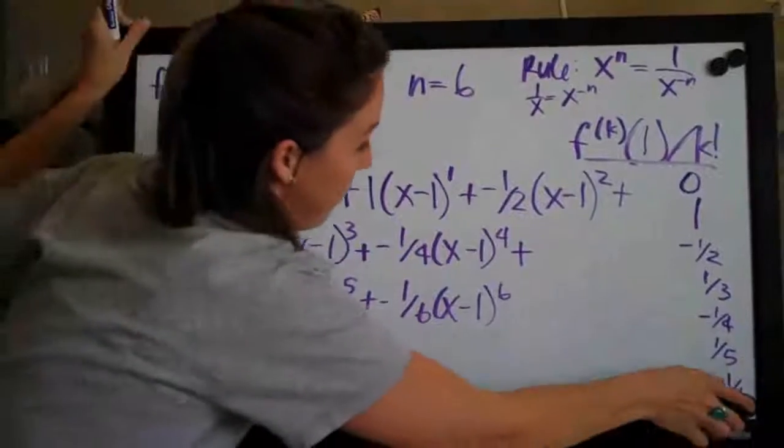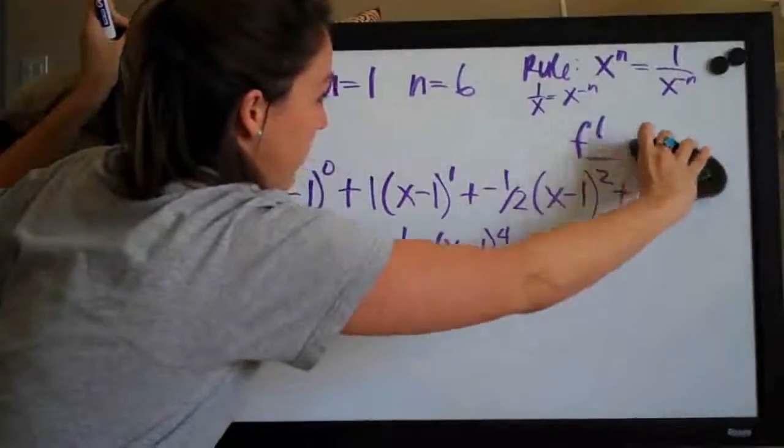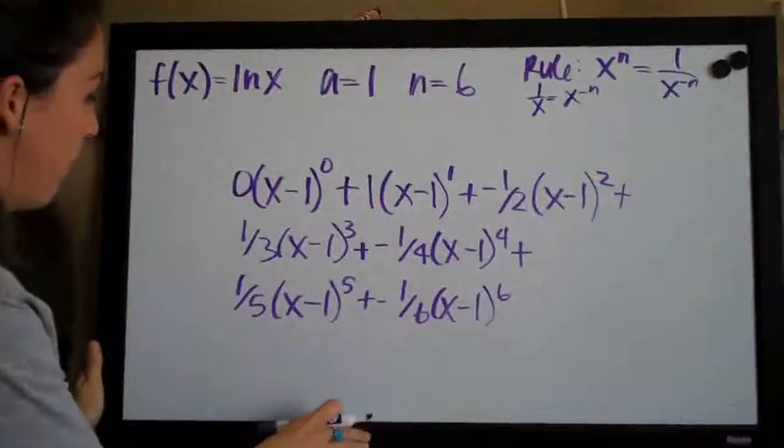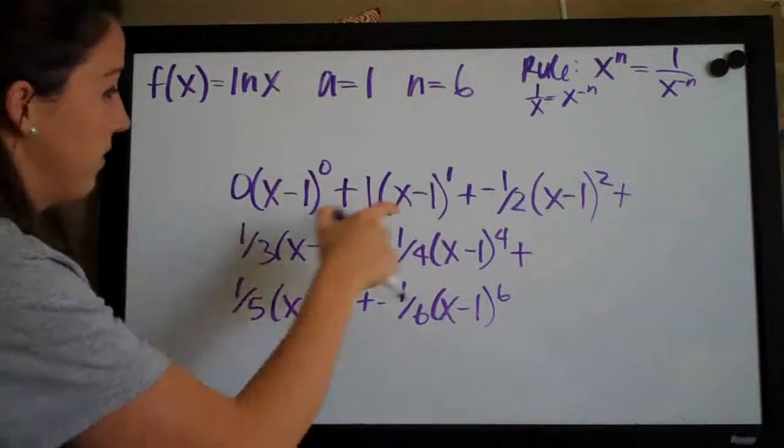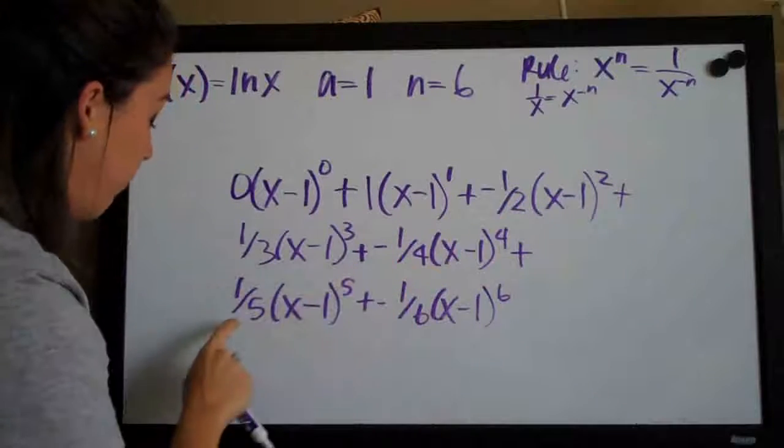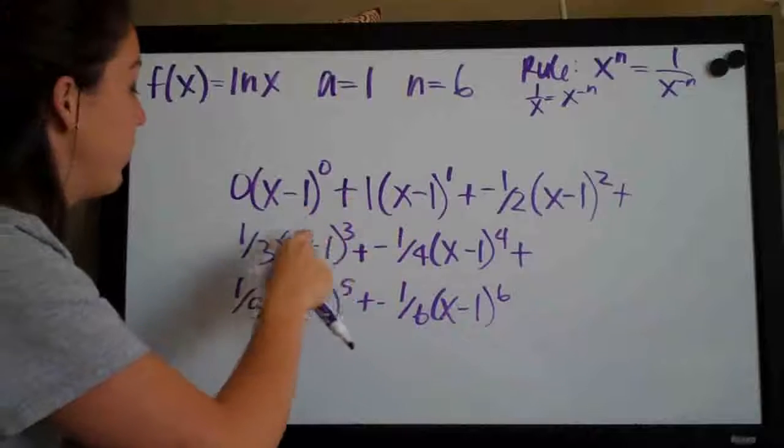So let me get rid of this stuff. You can see how we just wrote that out. You've got the coefficients that we had in this last column. Zero, one, negative one-half, one-third, negative one-fourth, one-fifth, and negative one-sixth. Those are always the coefficients.